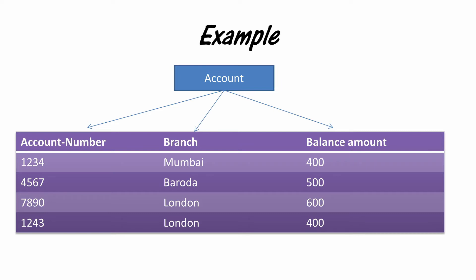These three headers represent the characteristics of each account present in the bank. If you have a bank account, it will have an account number, a branch in which it was opened, and a balance amount. In relational database language, these headers are called attributes.